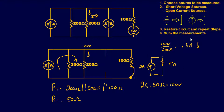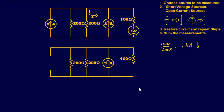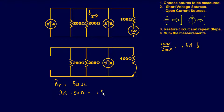Step three: restore the circuit and repeat. Now we choose the 3-amp current source. Short the voltage sources and open the other current source. We again have three resistors in parallel — total resistance is still 50 ohms. With 3 amps: 3 amps times 50 ohms gives 150 volts across the parallel combination. Current direction is again flowing downward, based on the current source orientation.